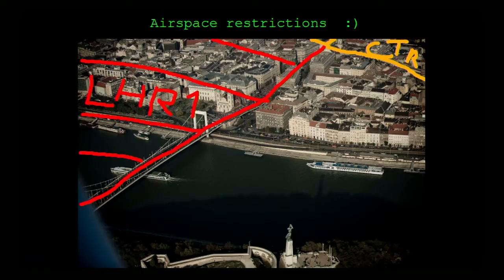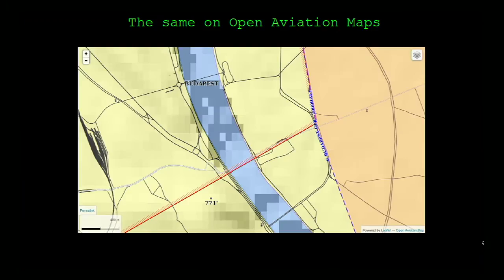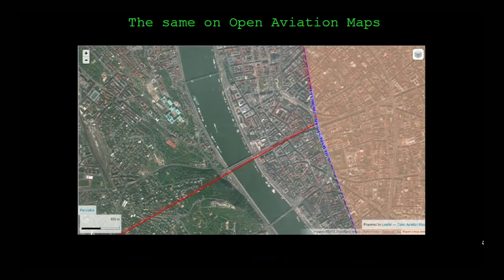This whole aviation nav thing is a virtual reality thing - you have to see stuff in the air which is just not there. The red part is restricted airspace, the CTR is the yellowish part, and this is the bridge and the river. The same thing with a satellite map underneath - these are screenshots from our Open Aviation Map project.